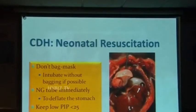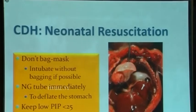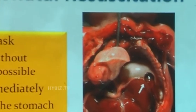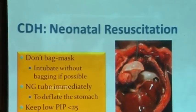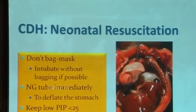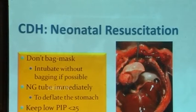If you are going to manage CDH and the diagnosis is known antenatally, the first thing is: try not to bag when the child is born. Try to intubate without bagging — that's number one. If you have to bag, keep PIP less than 25, and place an NG tube immediately after birth. Outcomes at large centers differ significantly between inborn and outborn CDH patients, largely because of high-pressure resuscitation done outside.